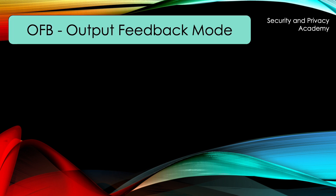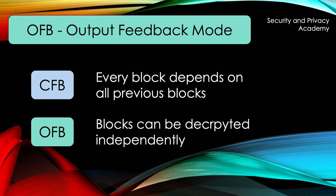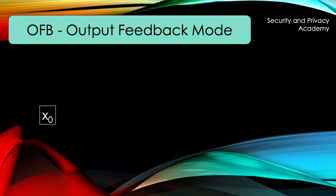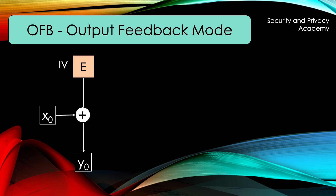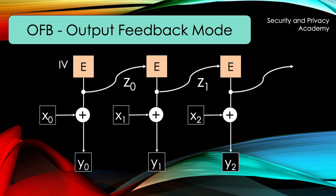Next, we move on to output feedback mode, OFB. We have seen that in CFB, every block depends on all previous blocks and errors would propagate throughout the ciphertext. OFB takes care of that by making sure that blocks can be decrypted independently. It also works on a byte-by-byte basis. If a plaintext byte X0 has to be encrypted, first an initializing vector together with the encryption box works as a sealed one-time pad which is XORed with X0 to yield Y0. The result of the combination of initializing vector and encryption box is now used as a new feed Z0 for the next byte and so on. To illustrate the immunity towards errors, we can look at Y1. It only depends on X1 and Z0 and not on Y0, meaning if Y0 gets altered during transmission, I can still decrypt Y1 without any problems, which I could not do in CFB.